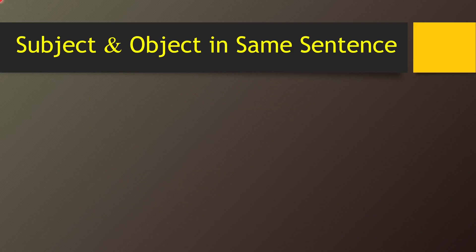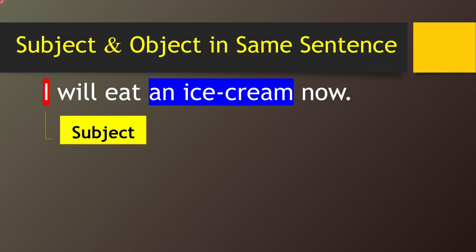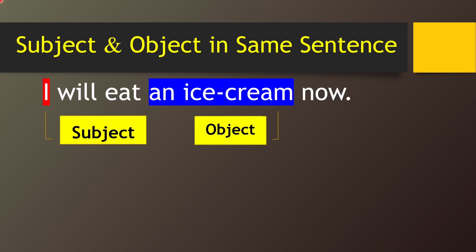Now let me show you how you can find subject and object both in the same sentence. I will eat an ice cream. I hope you got the answer already. I is the subject here because I is doing the action. And ice cream is the object here because it is receiving the action. And what is the action? Eat — eat is the action in this sentence.